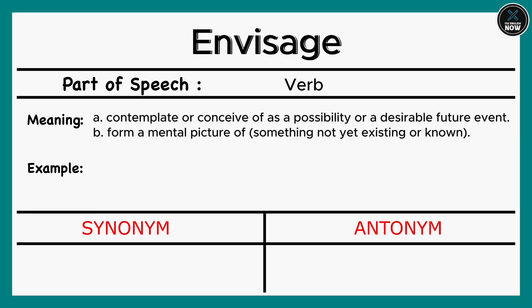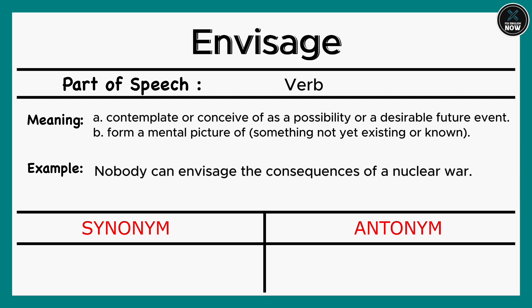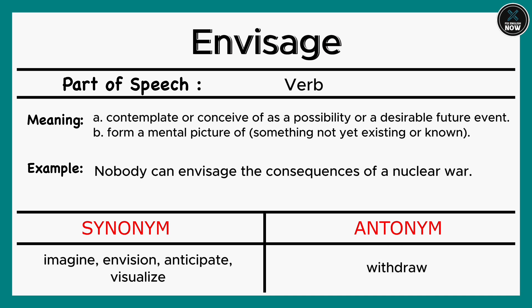Envisage: A. Contemplate or conceive of as a possibility or a desirable future event. B. Form a mental picture of something not yet existing or known. Example: Nobody can envisage the consequences of a nuclear war. Synonyms: Imagine, Envision, Anticipate, Visualize. Antonym: Withdraw.